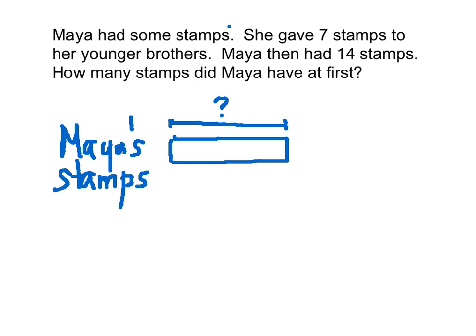I've taken care of the information there, so I placed a check mark. She — who's she? Maya. Maya gave seven stamps to her younger brothers. Maya had to have given seven of the stamps she had to her younger brothers. So if this is the bar for the stamps she had, those seven stamps she gave to her younger brothers is actually going to be a part of this amount. So I'm going to break up Maya's stamps into a part, and from here to here will be the seven stamps that Maya gave to her younger brothers.